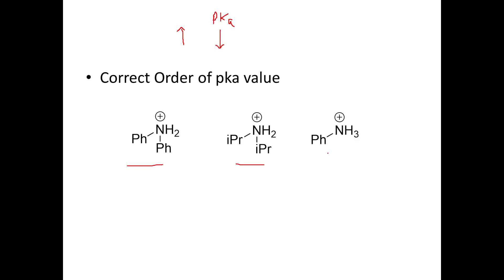This question came in June 2017 for two marks, and we were given three compounds. They were asking what will be the pKa values for the following compounds. One simple way to do this: the more unstable a compound is, the more easily it will donate the proton and convert to a stable form. So we simply have to find the compound which is very unstable.